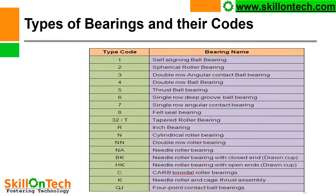Type of bearing and their codes: if 1 is the first digit, it is a self-aligning ball bearing; 2 = spherical roller bearing; 3 = double row angular contact ball bearing; 4 = double row ball bearing; 5 = thrust ball bearing; 6 = single row deep groove ball bearing; 7 = single row angular contact bearing; 8 = felt seal bearing. 32/T = tapered roller bearing; R = inch bearing; N = cylindrical roller bearing; NN = double row roller bearing; NA = needle roller bearing; BK = needle roller bearing with closed end; HK = needle roller bearing with open ends; CARB = toroidal roller bearing; K = needle roller and cage thrust assembly; QJ = 4-point contact ball bearing.